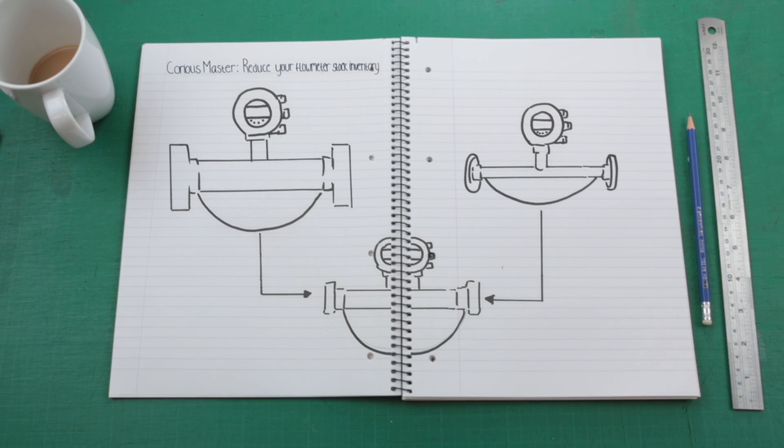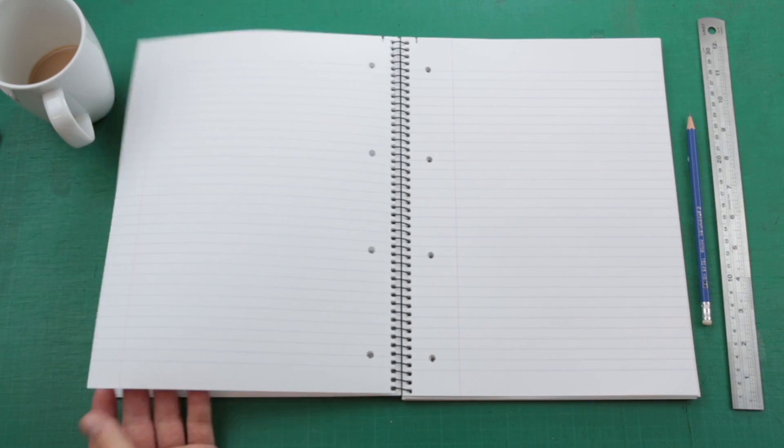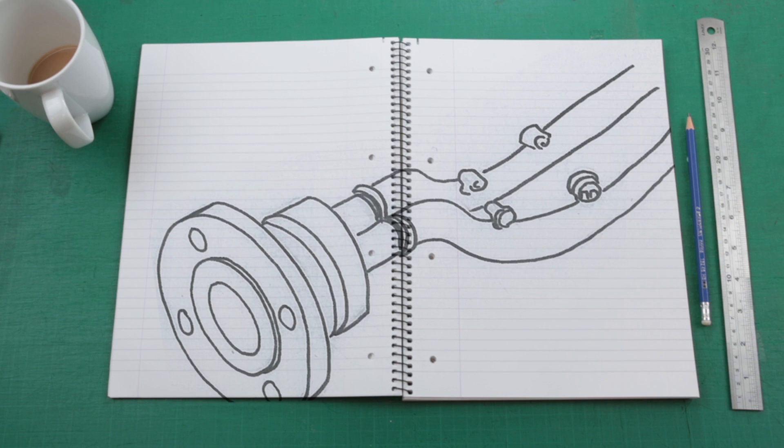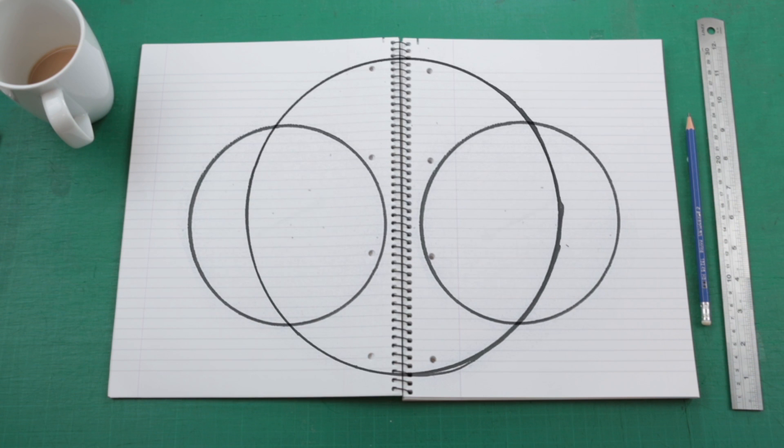This exceptional rangeability is down to engineering precision and robust construction that has allowed ABB to achieve a larger internal diameter than other Coriolis meters, without compromising accuracy.